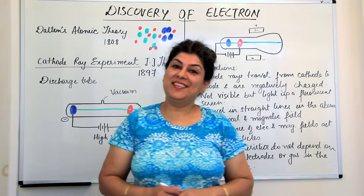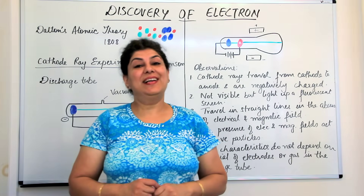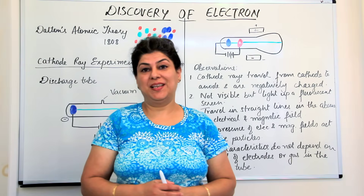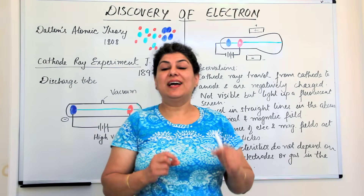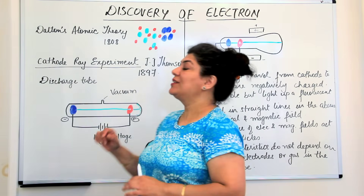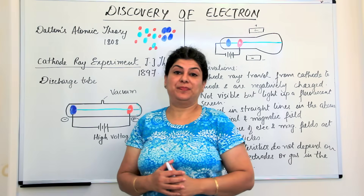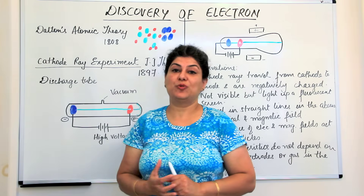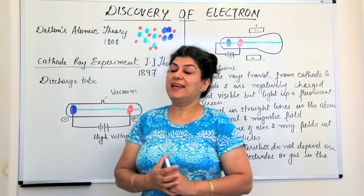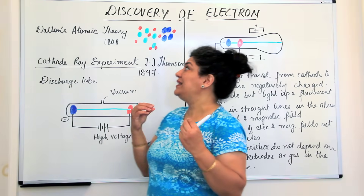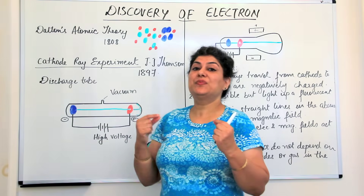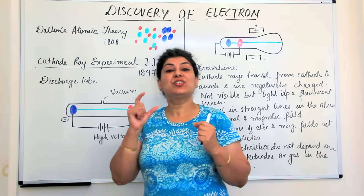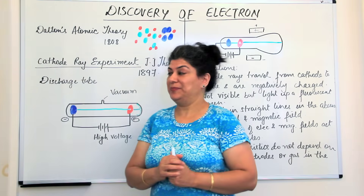Hello, in this video I'll tell you about the discovery of electrons. In previous videos I talked about the discovery of an atom, how Democritus coined the term 'atomos' and how he said that it was the smallest particle of matter, and 'atomos' means it was uncuttable.